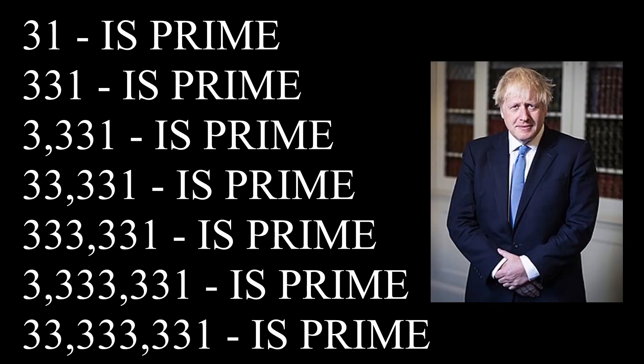31 is a prime number, along with 331, 3331, 33,331, and so on. Such a pattern might make somebody like the prime minister conclude that all such integers with 3s in every place value but the ones place are in fact primes.